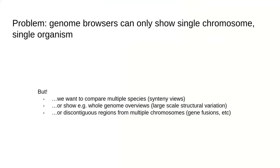So what's the problem? Classical genome browsers can only show a single chromosome from a single organism on the screen at a time. But we want to compare multiple species — for example, create synteny views, show whole genome overviews to show large-scale structural variation, or show discontiguous regions from multiple chromosomes to show gene fusions.